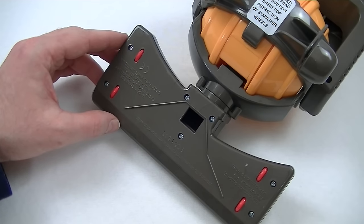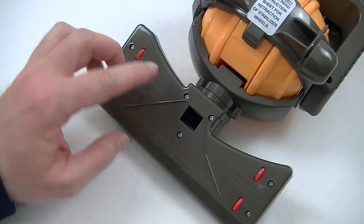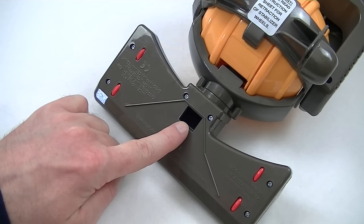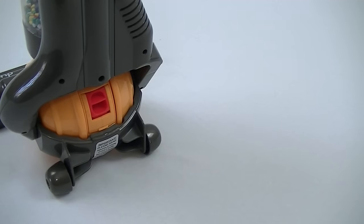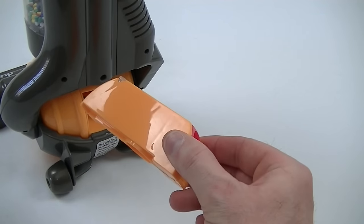Unlike the real Dyson DC25, this toy version doesn't have a rotating brush bar. Instead, we've got a suction inlet here that enables us to pick up small pieces of dirt. And any dirt that we manage to pick up with this toy Dyson is collected in this little container located in the ball.